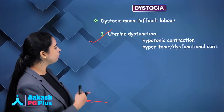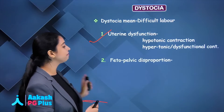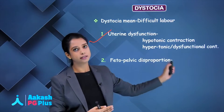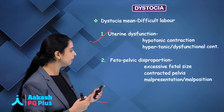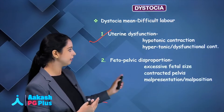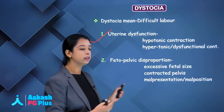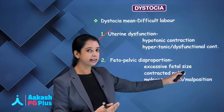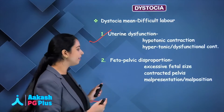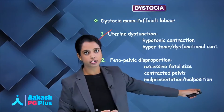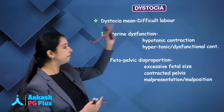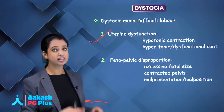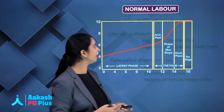Another cause of difficult labour is fetopelvic disproportion. It can occur due to these reasons: either the fetal size is more, the pelvis is contracted, or there is malpresentation or malposition.